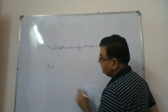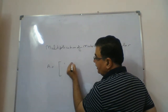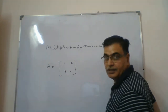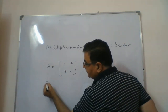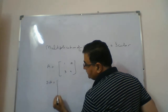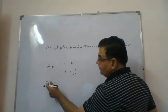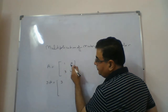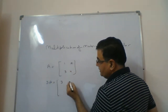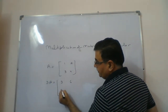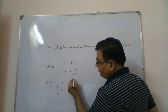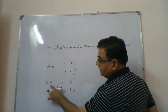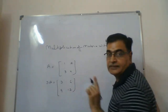If A is a matrix, let this matrix be [1, 2, 3, 4]. If I say you multiply this matrix with 3 — 3 being a scalar number — then this number will multiply with each and every element of the matrix. So it will become 3, 6, 9, and 12. This is called multiplication of a matrix with a scalar.